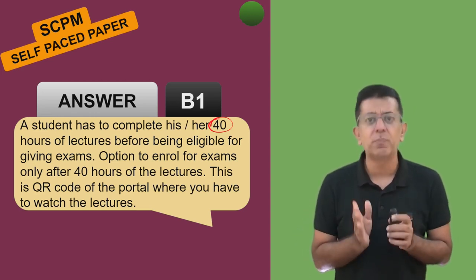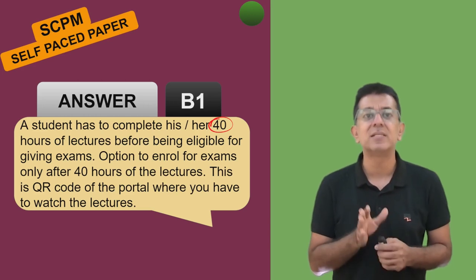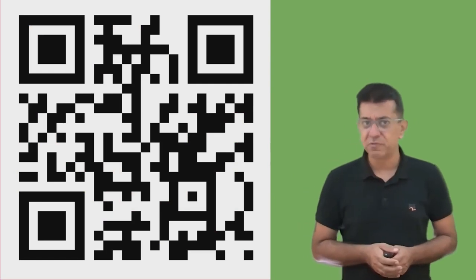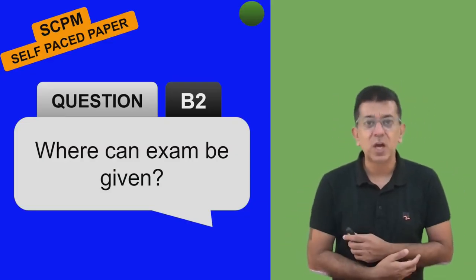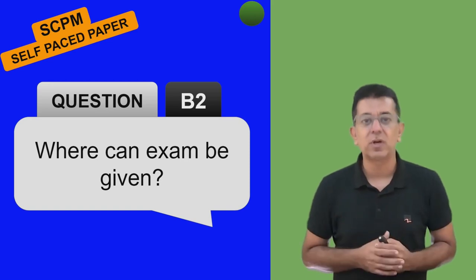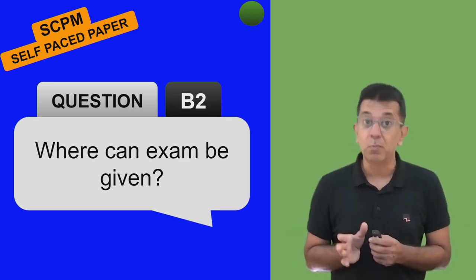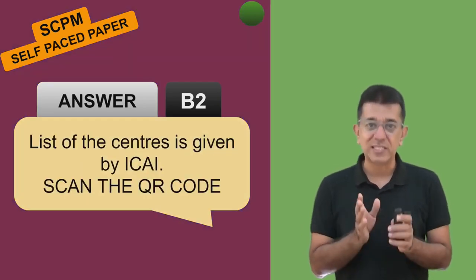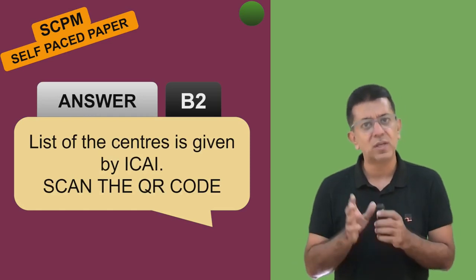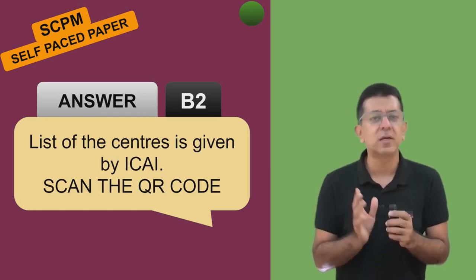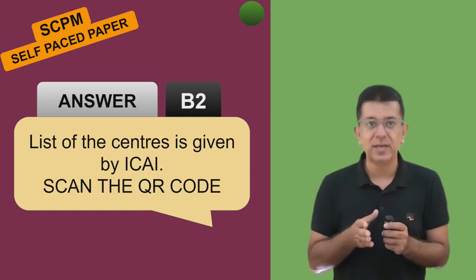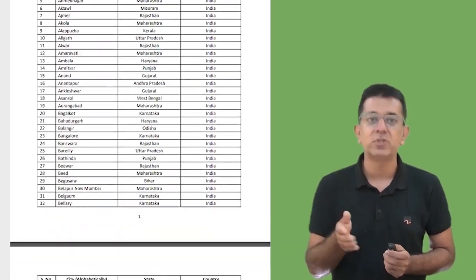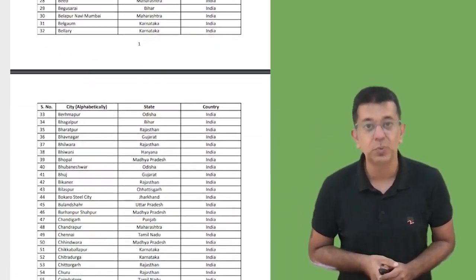One advice to every student: the moment you clear your CA Inter, these should be the first things to be done. Try to appear for your self-paced papers as early as possible. Regarding where exams can be given - in my earlier video I had said examination may be allowed from home, but ICAI has now said no. They will have designated centers; you visit those centers and give the exam only there under controlled conditions. The list of all centers is available via QR code.